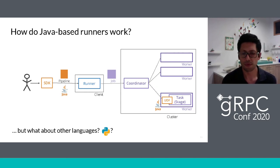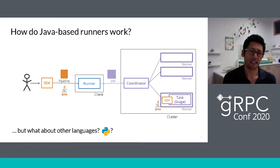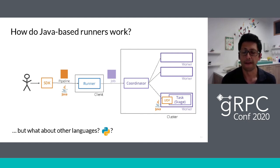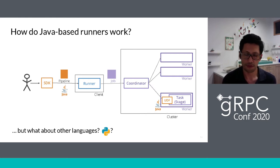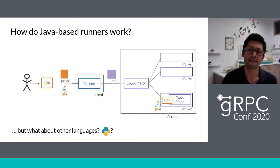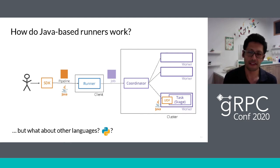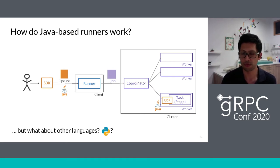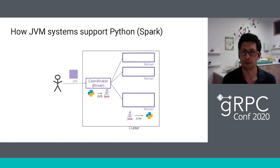But what happens when we have to support other languages like Python? One approach is to look at how JVM systems support Python today — for example, Spark. What Spark does is that if the user writes the program in Python, it invokes the Java part using Py4j. Then the job is distributed, the worker instantiates the Python process, and they communicate through Unix pipes.